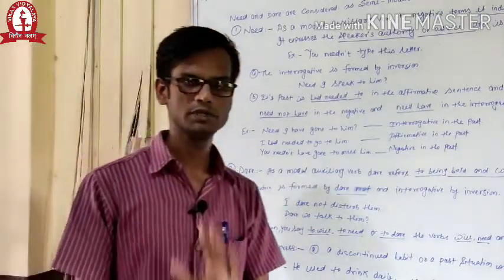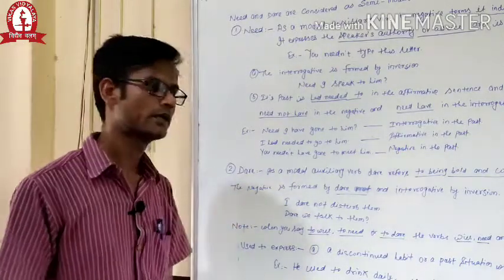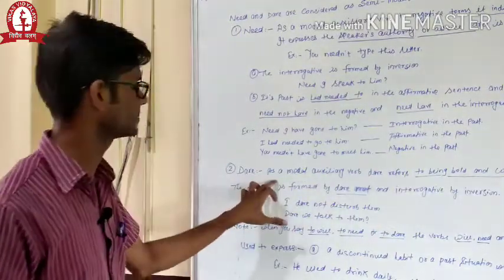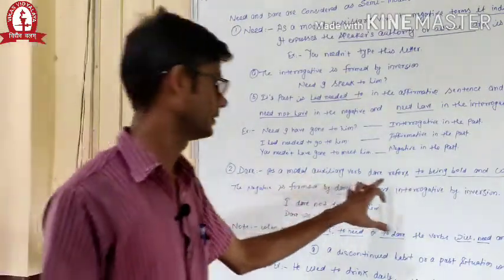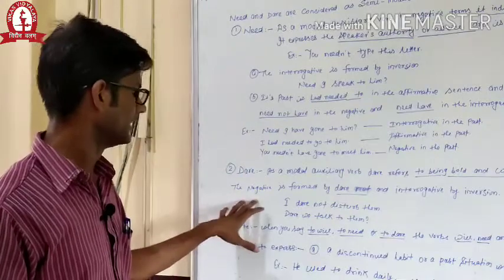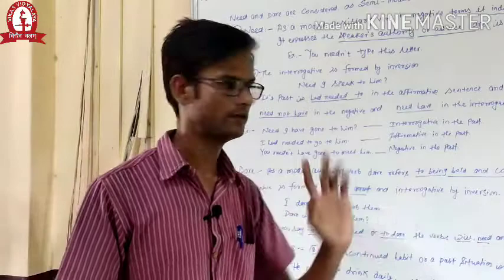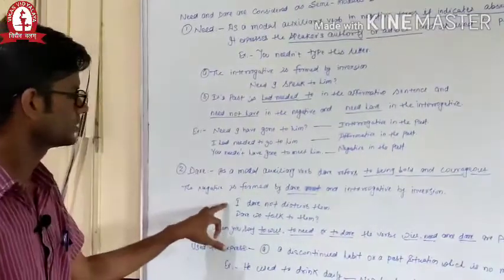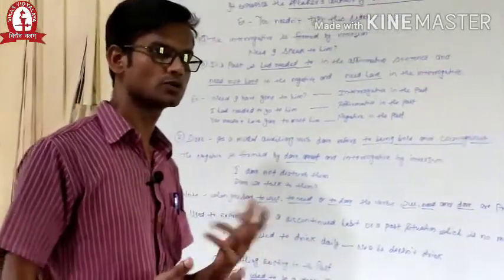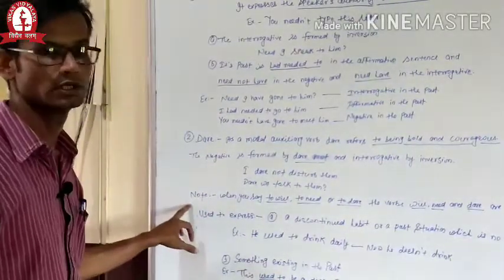Now we will discuss dare. Dare is showing to be bold and courageous. As a modal auxiliary verb, dare refers to being bold and courageous. The negative is formed by dare not and interrogative by inversion. For example: I dare not disturb them, and dare we talk to them?